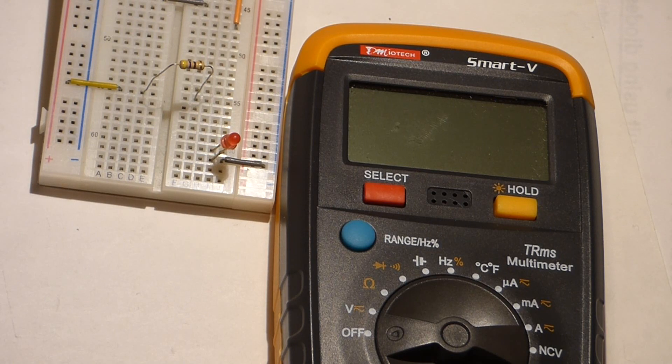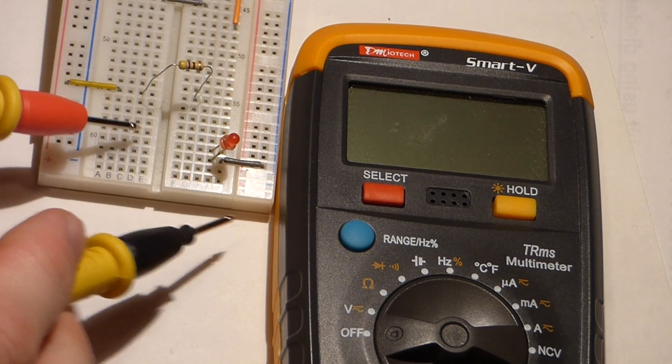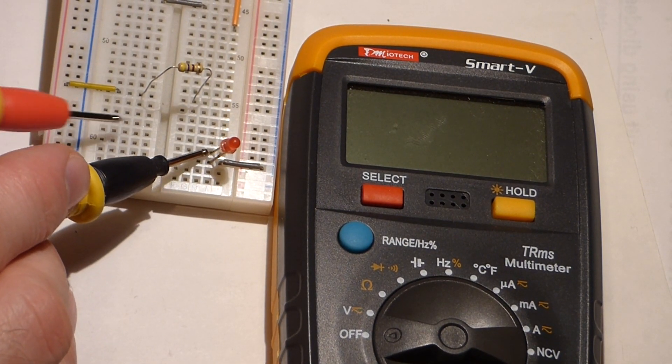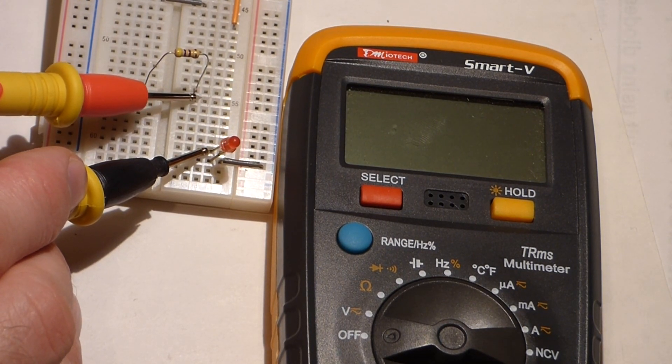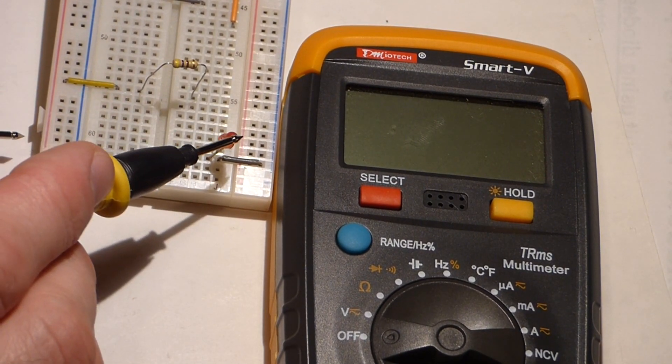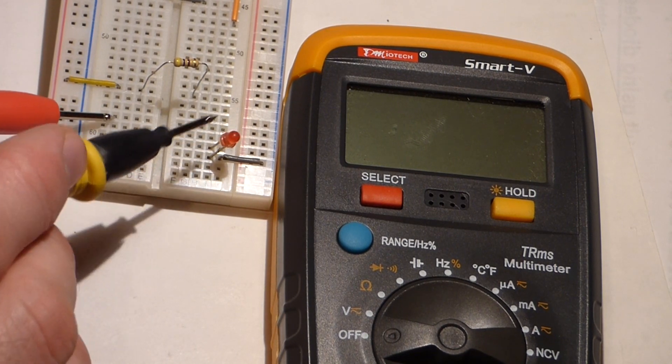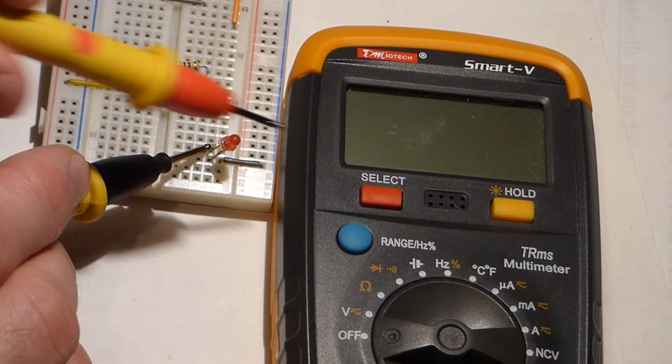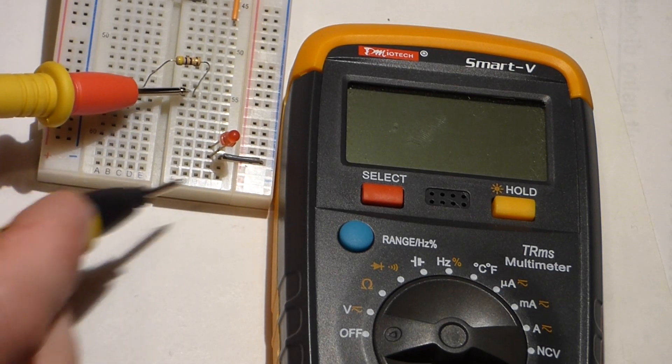So that really is all there is to measuring current. You just need to have an open spot, such as between these two components, where you complete the circuit with the meter. So these are in series when I do this: the LED, then the multimeter, and then the resistor.